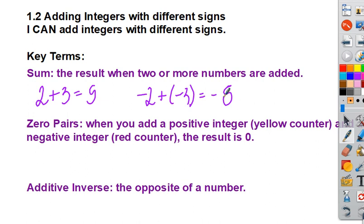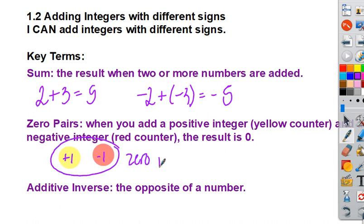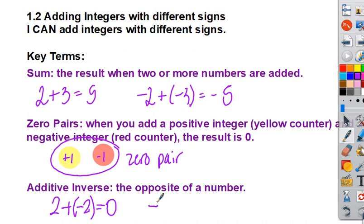Zero pairs: when you add a positive and a negative counter together, we call this a positive one and a negative one. These together cancel out and are known as a zero pair. We want you to be familiar with counters and how they look in relation to integer problems. Additive inverse means the opposite of a number — if you have two and add negative two, that's the additive inverse and will always equal zero. Starting with negative seven and adding positive seven will also always give you zero.